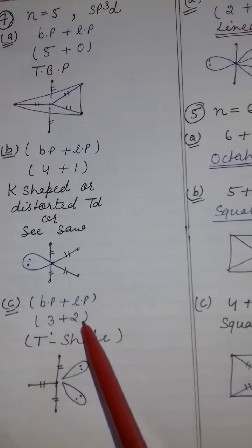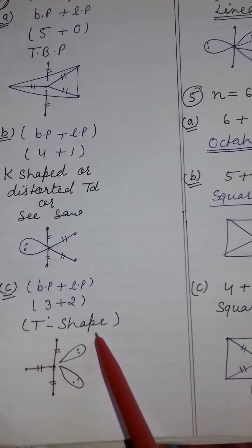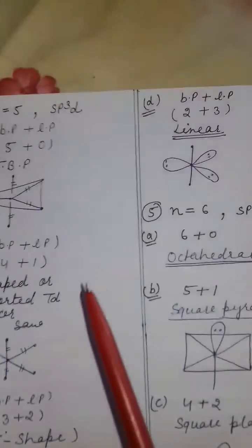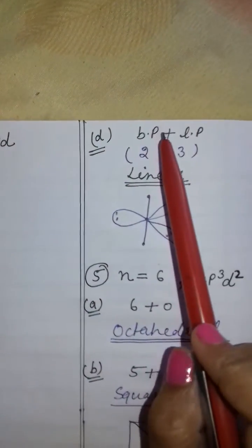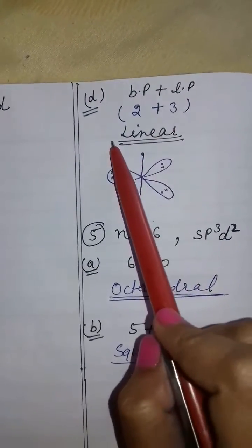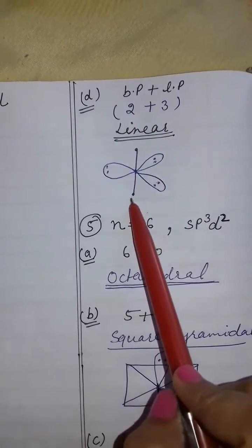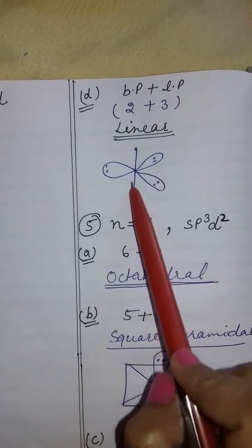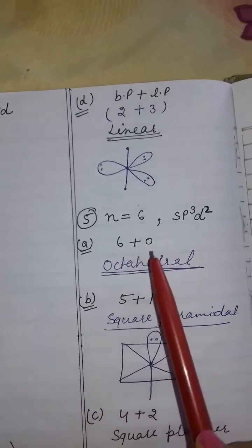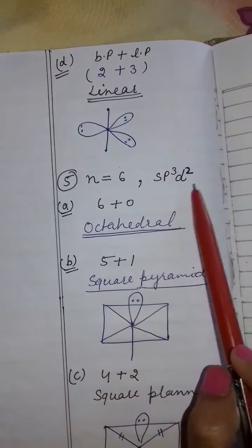If bond pairs are 3 and lone pairs are 2, then shape is T-shape. If bond pairs are 2 and lone pairs are 3, then shape will be linear.